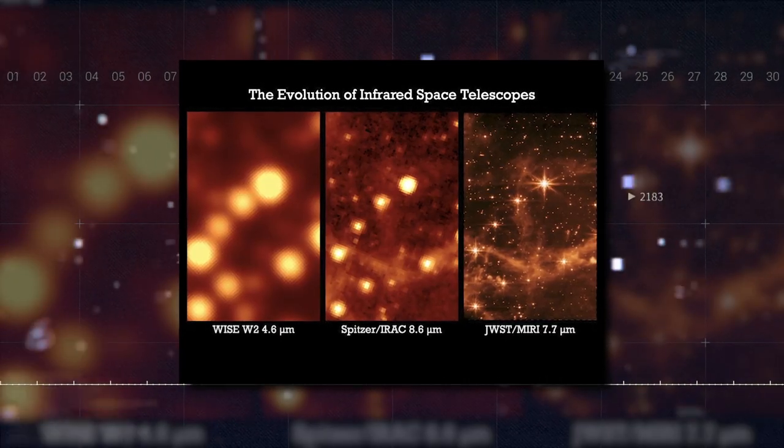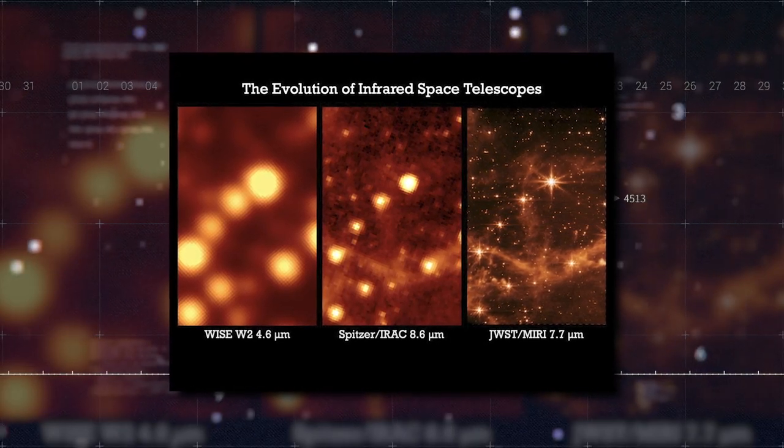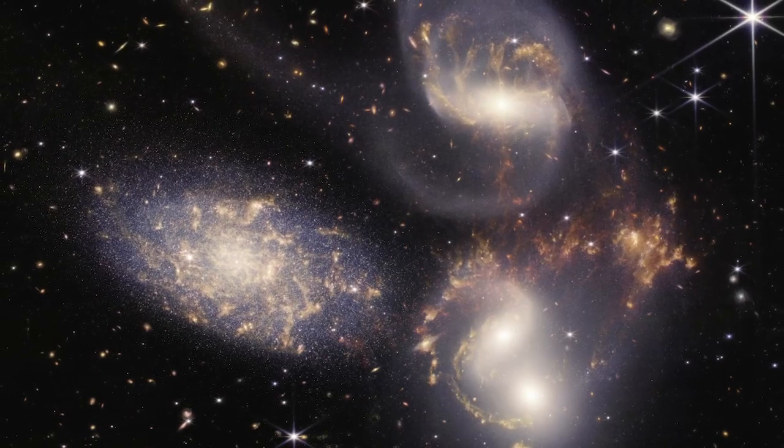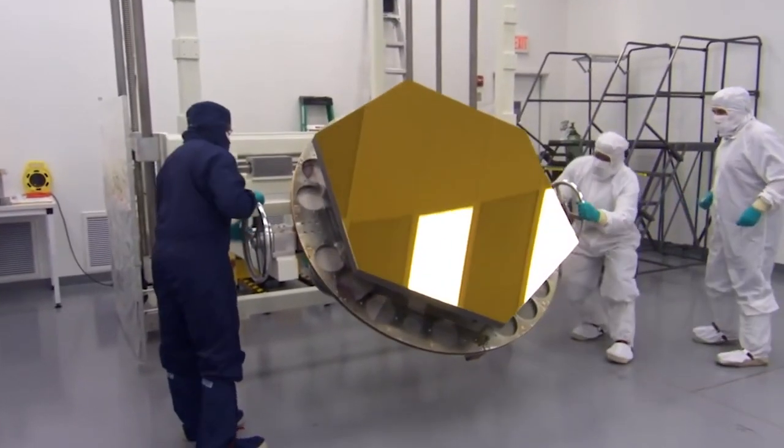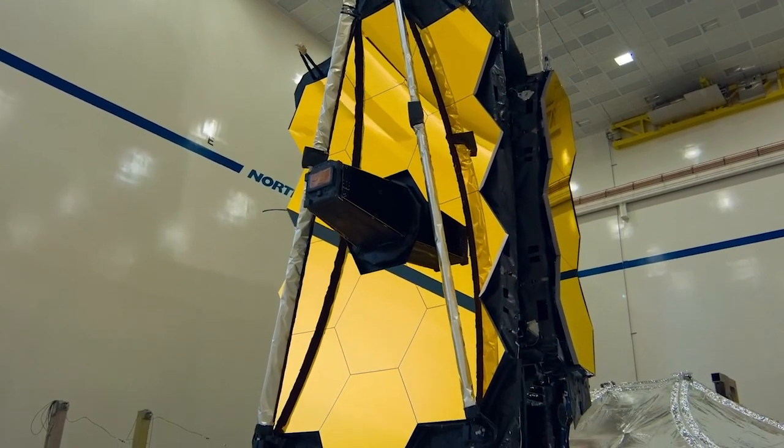With its massive mirror and sunshade filtering infrared radiated by the Sun, Earth, and Moon, Webb may provide photos of unprecedented quality. As soon as the array of equipment aboard cooled down, astronomers swung into action by putting Webb to work.